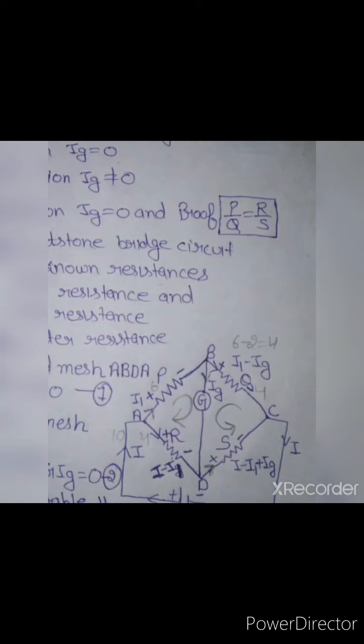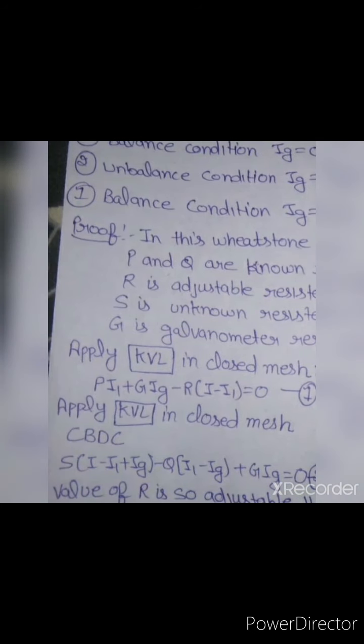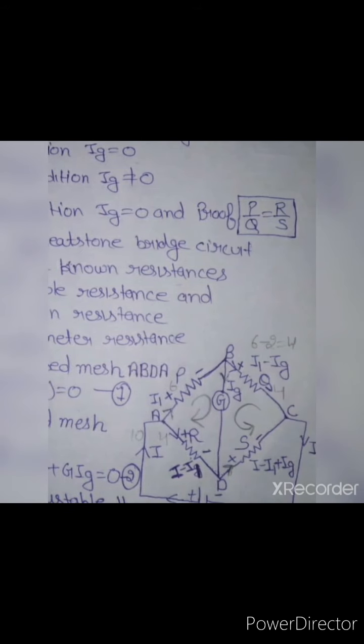Next loop BCDB, anticlockwise direction. B to C: (I minus I_G) times Q. C to D opposite direction.